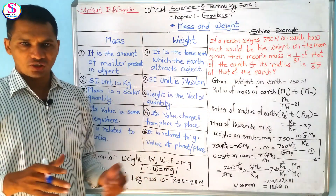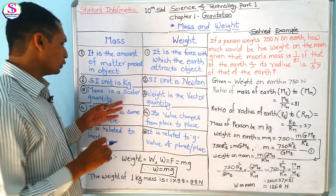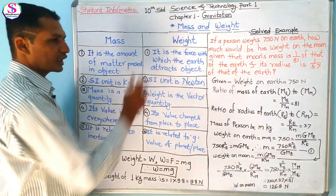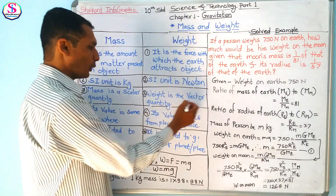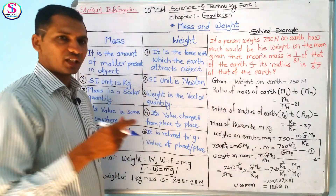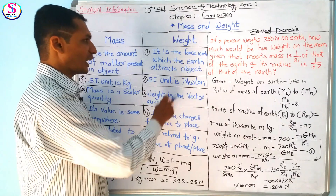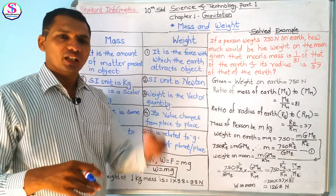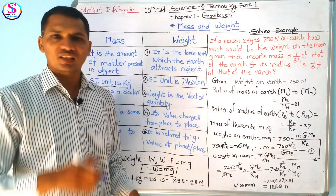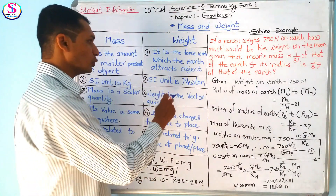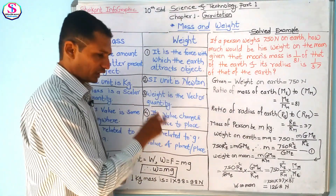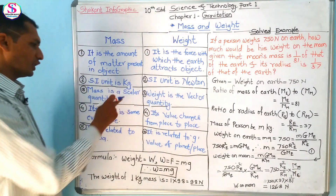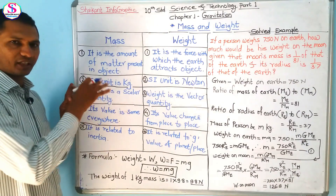The third point of difference between mass and weight is that mass is a scalar quantity — it doesn't need any direction, so magnitude is sufficient to show the mass. But in the case of weight, weight is a vector quantity. It is a force with which the earth attracts, so it requires direction.